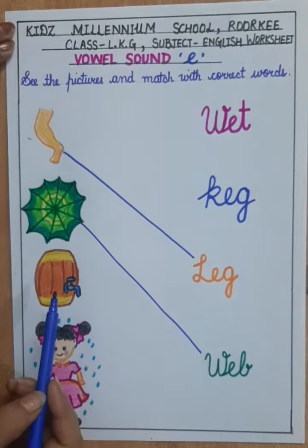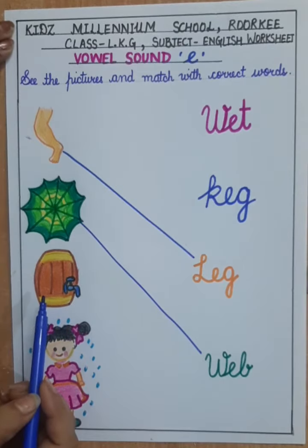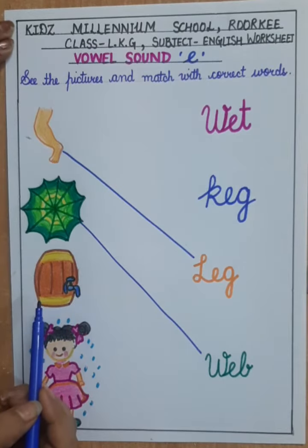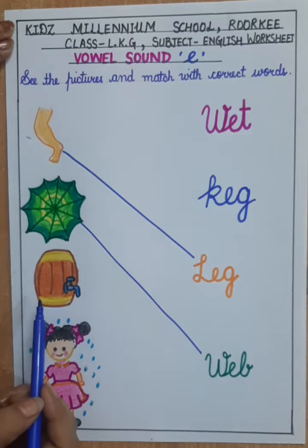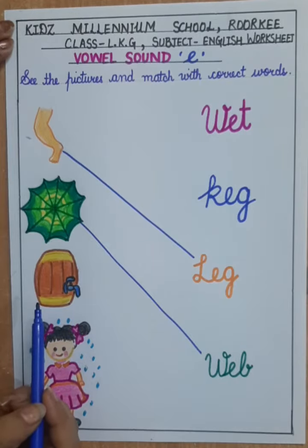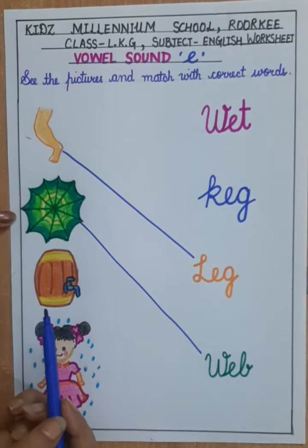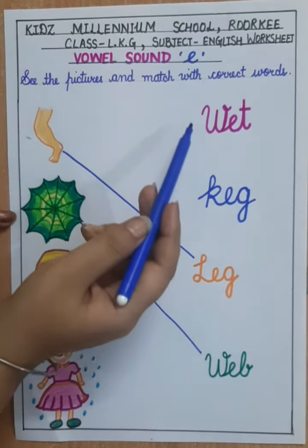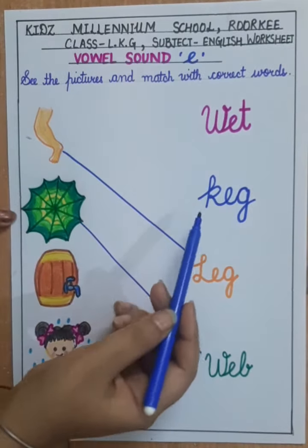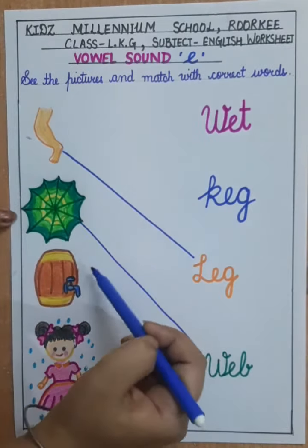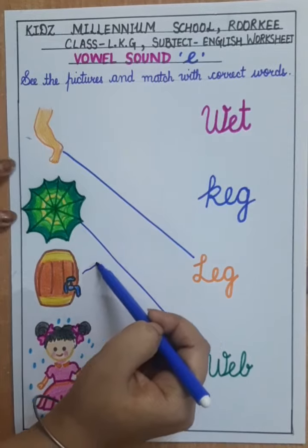Next is keg. Keg means a wooden container. K-E-G. Match it here.